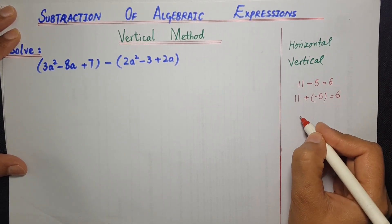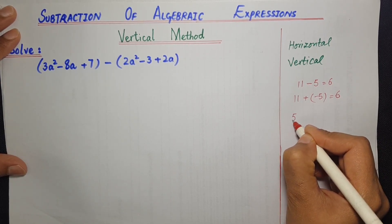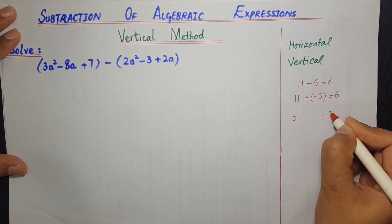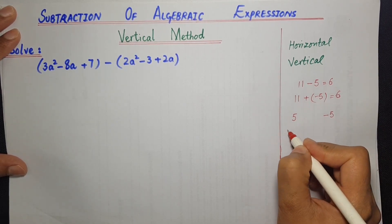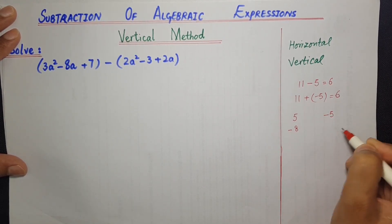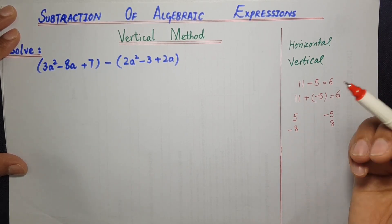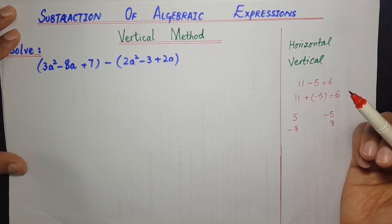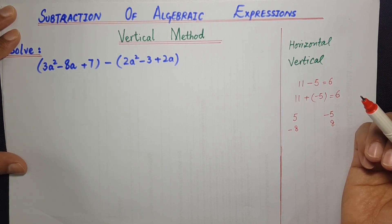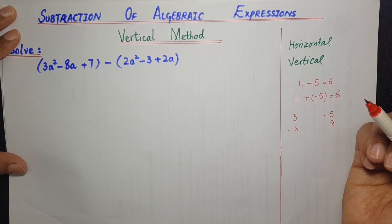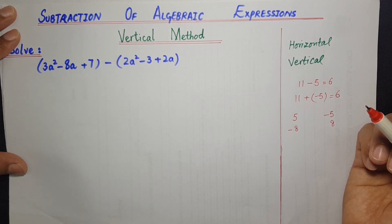additive inverse کیا ہوتا ہے؟ جیسے ایک number ہے 5، اس کا additive inverse ہوگا minus 5۔ اسی طرح اگر ایک number ہے minus 8، تو اس کا additive inverse ہوگا 8۔ تو same like algebraic expression میں، جب بھی ہم subtract کر رہے ہوں گے، first expression کو second expression کے additive inverse کے ساتھ plus کریں گے، یعنی second expression کی تمام terms کے sign change کریں گے۔